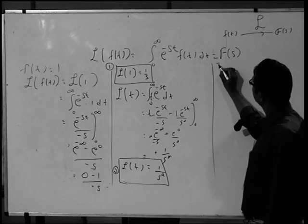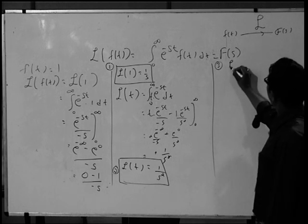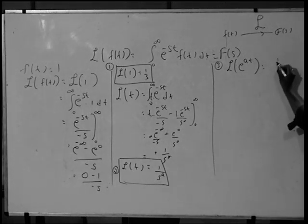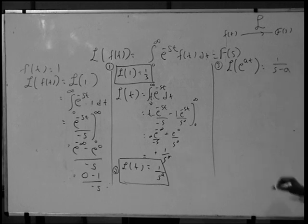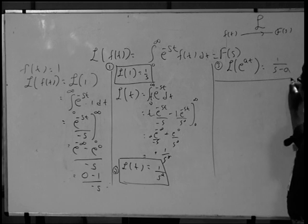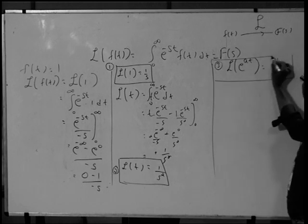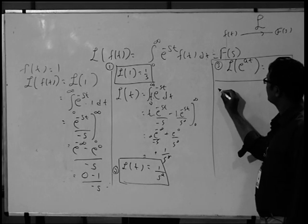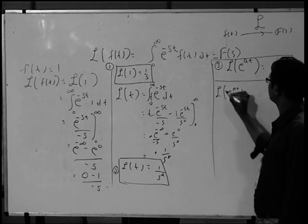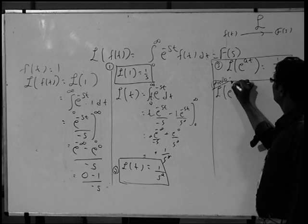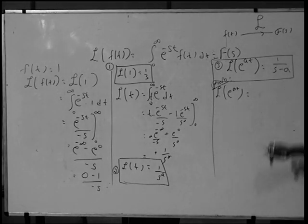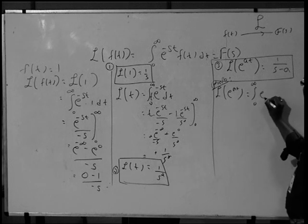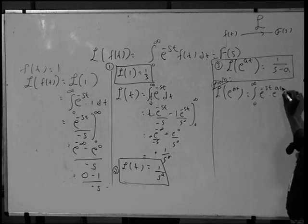Now consider another function: Laplace transform of f(t) equal to e raised to at. We can show that this equals 1 divided by s minus a. That is formula number 3: Laplace transform of e raised to at is 1 by (s minus a). We can prove this by applying the definition — Laplace transform of e raised to at is the integral from 0 to infinity of e raised to minus st into e raised to at dt.